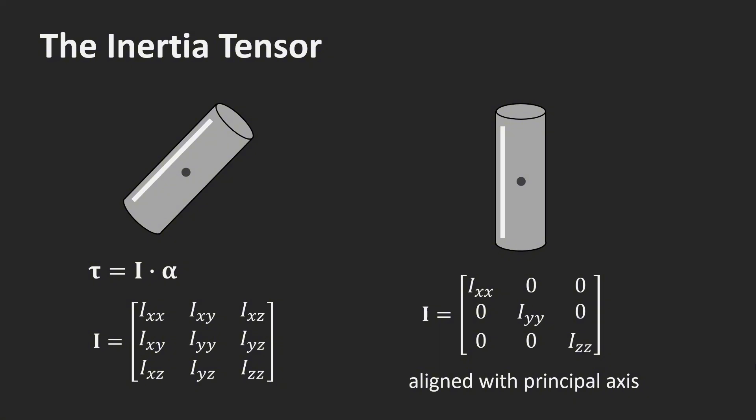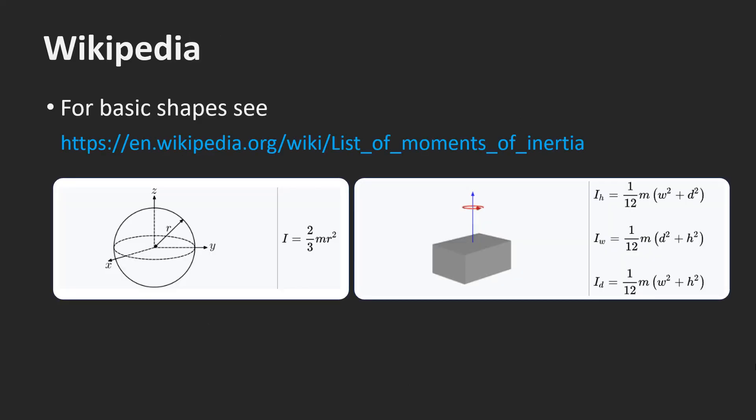Whenever the inertia tensor is present in an equation, I transform all the quantities involved into the local frame of the body and perform the calculations there. You can find the inertia tensor for various basic shapes on Wikipedia. I will create another tutorial on how to compute the inertia tensor and other physical quantities for arbitrary triangle meshes.